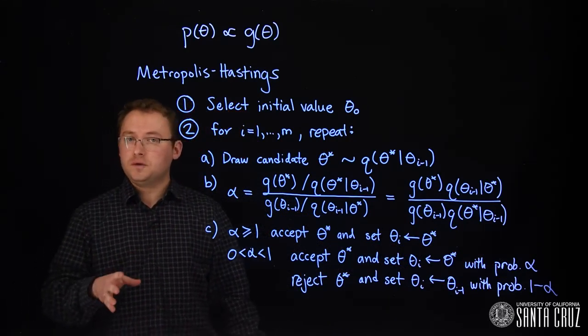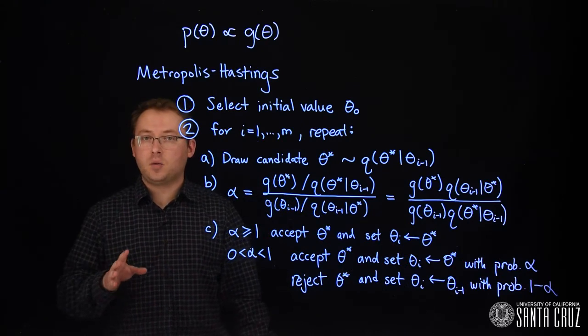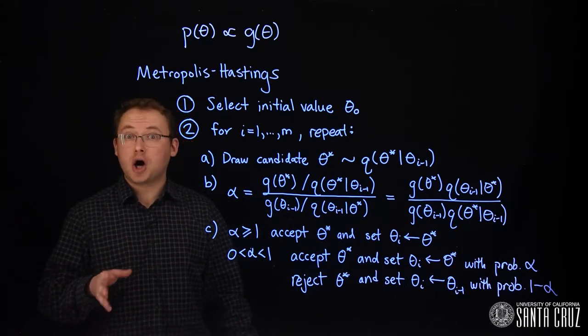Since our decision to move to the candidate only depends on where the chain currently is, this is a Markov chain.